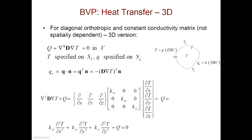So in essence, you have to solve this partial differential equation, and there can be many different applications where the temperature is specified or you have heat applied to the part. We also found that Q_N can be related to the conductivity matrix D bold times the gradient of the temperature field, giving you the bold Q across that surface, but dotted with N gives you the heat flux normal to that surface. That's what we had discussed in Lecture 4.